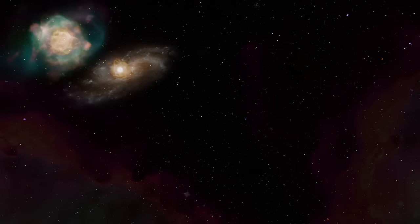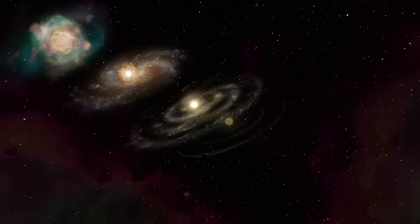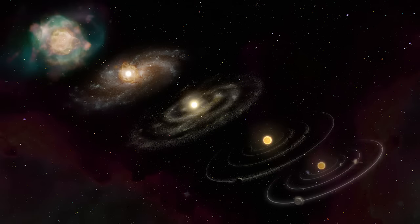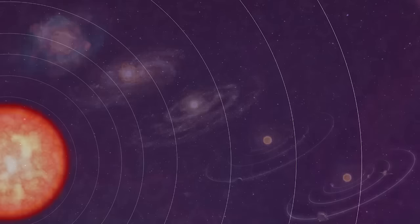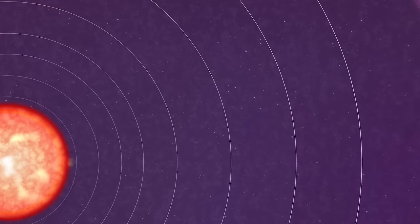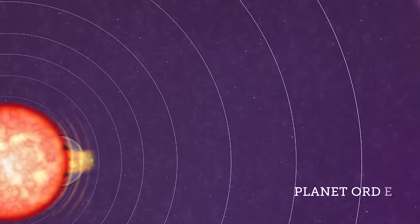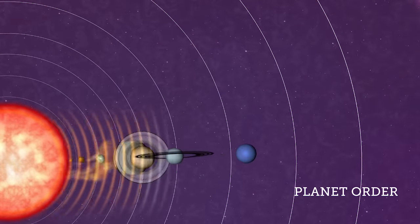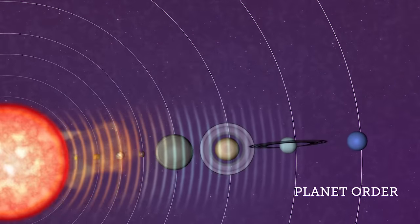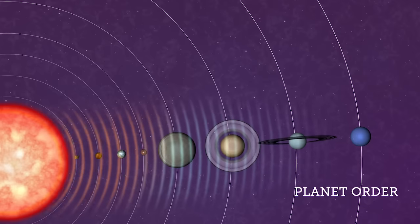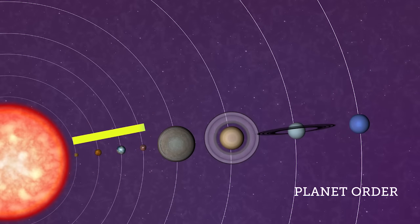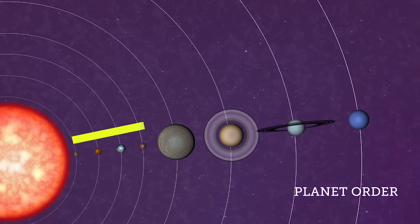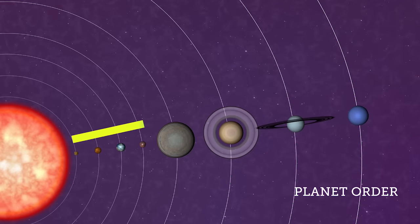The nebular hypothesis also explains how the planets are arranged. The heat and solar winds caused by the Sun swept the lighter gases farther out into the developing solar system. This is why the rocky terrestrial planets — Mercury, Venus, Earth, and Mars — are located closer to the Sun.